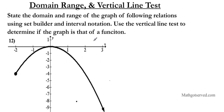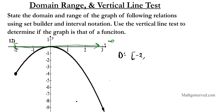Remember, the domain is basically the horizontal span of the graph — how wide is your graph? Looking at the x-axis projection, negative 2 is included and it goes all the way to infinity. So the domain is from negative 2 all the way to infinity. Using inequality notation, x is greater than or equal to negative 2. That's your domain.